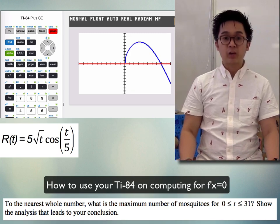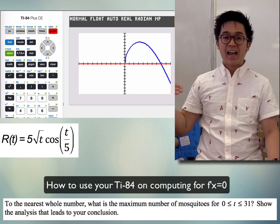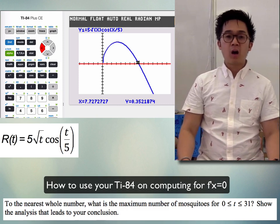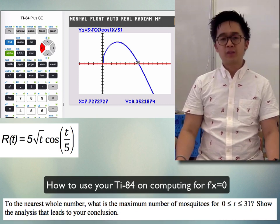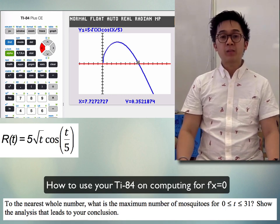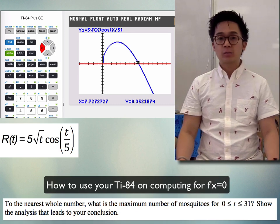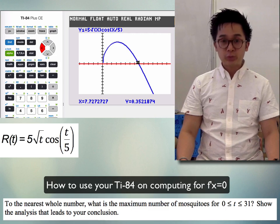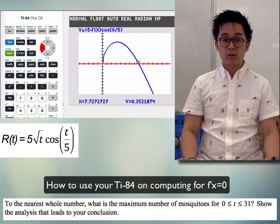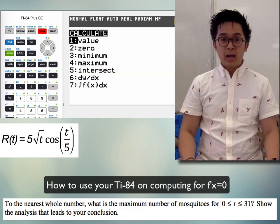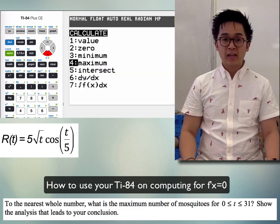We use our TI-84 to find the point of intersection of our derivative function with the x-axis (y = 0). If we just place the cursor on the intersection, the TI-84 gives only an approximated value. To get the actual point of intersection, push 2nd→TRACE and go to Intersect, or push 5.